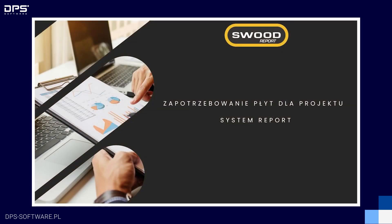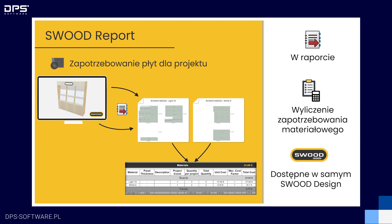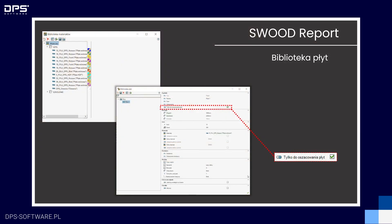Przechodzimy do raportu SWUT. W ramach raportu SWUT wprowadzono nowość polegającą na generowaniu zapotrzebowania płyt dla projektu oraz tak zwany system report. W nowej wersji istnieje możliwość wyliczenia zapotrzebowania na płyty dla danego projektu, możliwe to jest posiadając jedynie SWUT Design. W bibliotece materiałów znajdziemy dostęp do biblioteki płyt, wzbogaconej o nowy parametr — tylko do oszacowania płyt. Zaznaczając ten checkbox, ustalimy, że dana płyta będzie wykorzystywana podczas generowania raportu do wyliczenia zapotrzebowania.